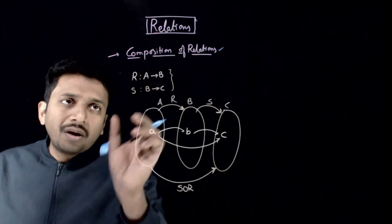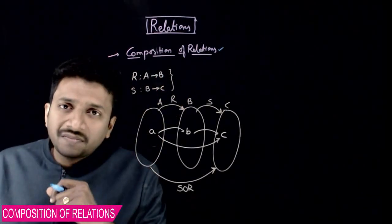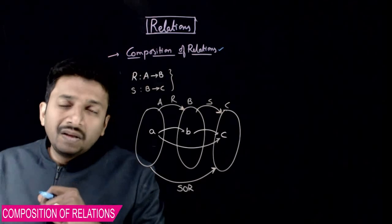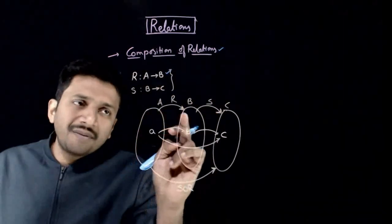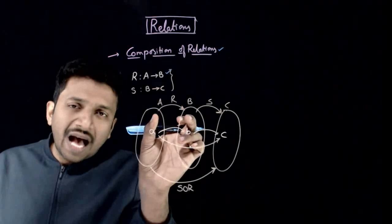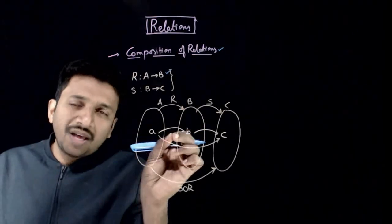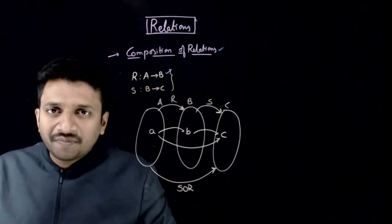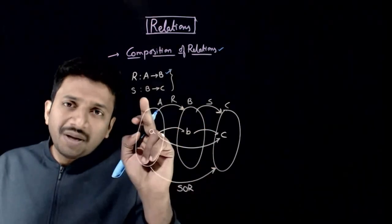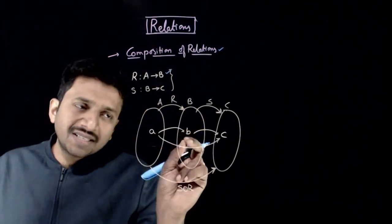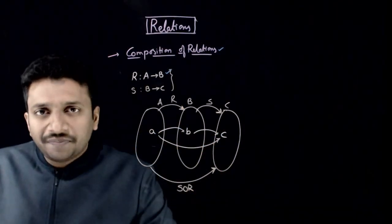Let us look at what a composition of relation is. If R is a relation defined from A to B — that is, R connects some of the elements in A with some of the elements in B — and let S be a relation from B to C, that is, S connects some elements of B with certain elements of C.